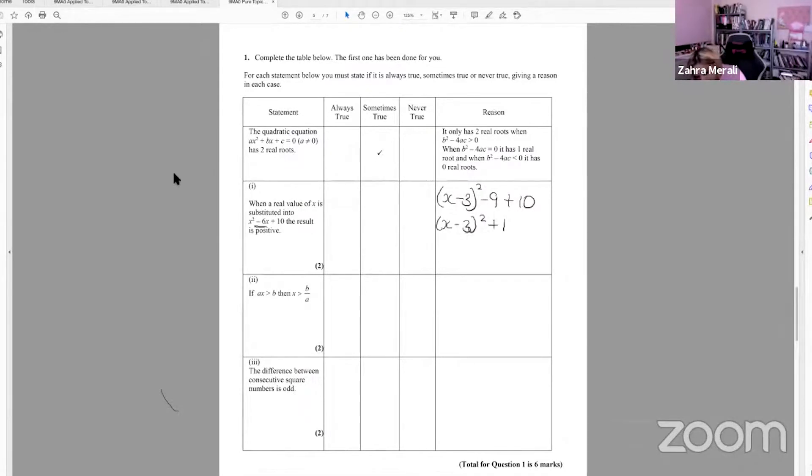Which we know is always true, because a square number is always positive. So then if you add 1 to it, it's definitely always going to be positive. So you can deduce it's always true and your proof can be your completed square, but you could write it like this is greater than or equal to zero as square number. Therefore, x minus 3 squared plus 1 is always greater than or equal to 1, so therefore greater than or equal to zero. So always positive.